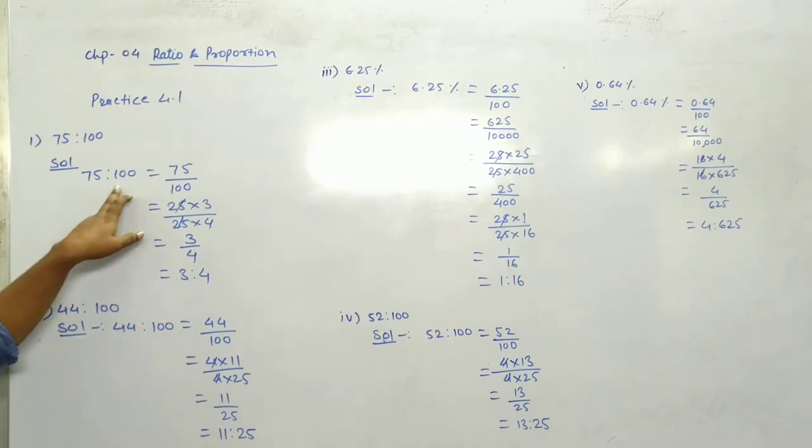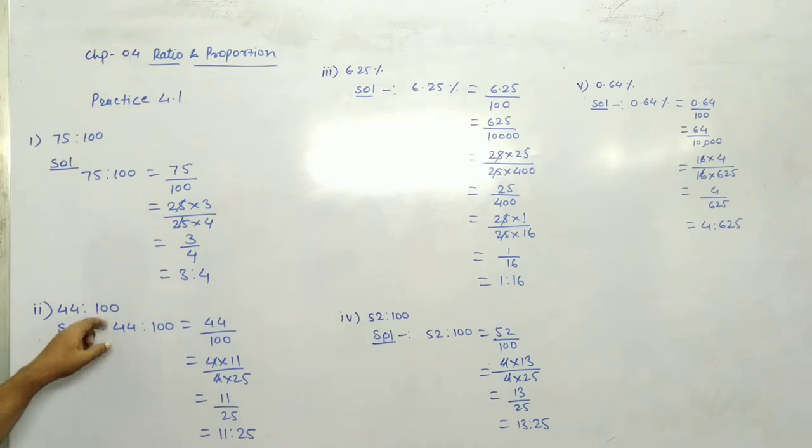Next 44 ratio 100 is equal to 44 divided by 100. 4 into 11, 4 into 25. Again 4, 4 cancel. Answer is 11 upon 25. Ratio is 11 ratio 25.